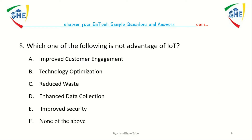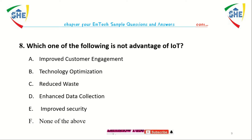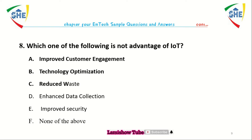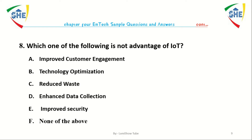Question number eight: Which one of the following is not an advantage of Internet of Things? A. Improved customer engagement, B. Technology optimization and reduced waste, C. Enhanced data collection, D. Improved security, E. None of the above.